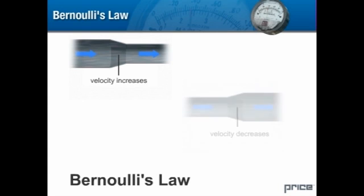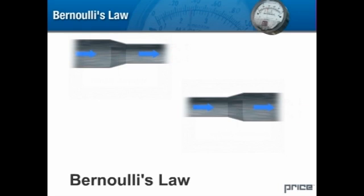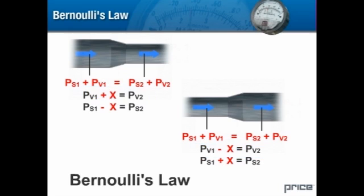Bernoulli's law states that if we change the velocity of the airstream by passing it into a larger or smaller duct, the resulting change in velocity pressure will be offset by a change in static pressure. If the air passes into a smaller duct, we cause an increase in velocity pressure and the static pressure will decrease. If the air passes into a larger duct, we cause a decrease in velocity pressure and the static pressure will increase. In an idealized frictionless situation, the total pressure should be the same upstream and downstream of these transitions — whatever is gained or lost in velocity pressure is offset by a change in the static pressure. We use Bernoulli's law to help predict what will happen to pressure at transitions where the cross-section of the ductwork changes.